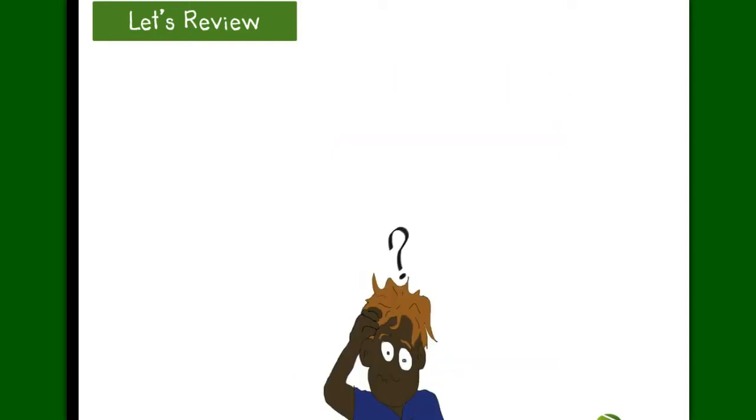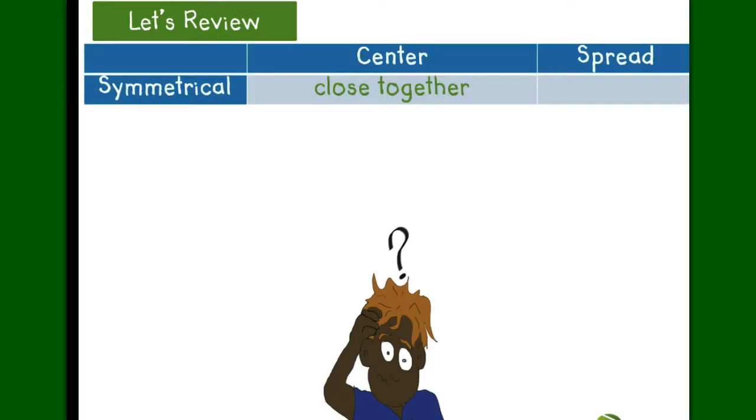So what generalizations can we make about graphs that are skewed left versus right? When a graph is symmetrical, it means that the mean and median are usually very close together.